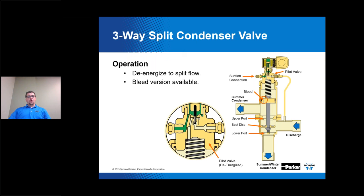Now we're getting into three-way split condenser valves. Splitting the condenser is a method of refrigerant side head pressure control that allows you to reduce the condenser capacity by 50 percent during low ambient conditions. That's typically done using a three-way split condensing valve. I'll cover the operation of the valve and show a diagram of how it's applied.